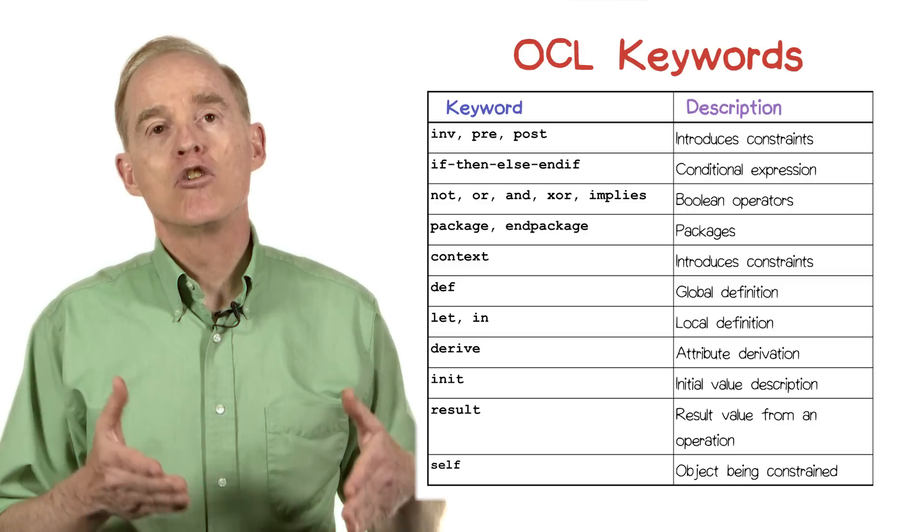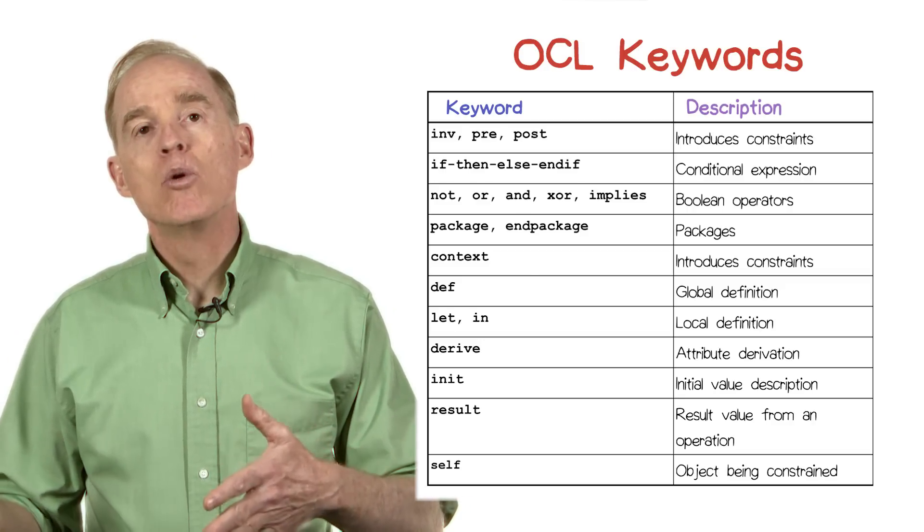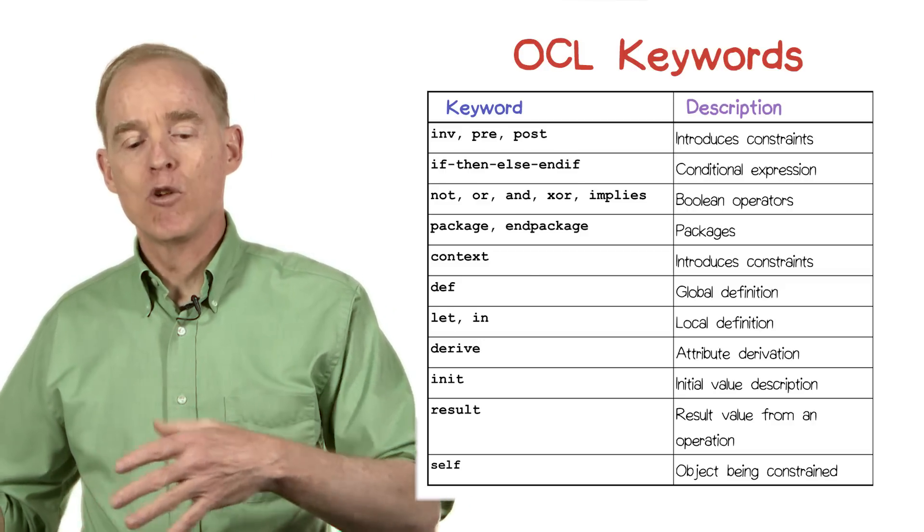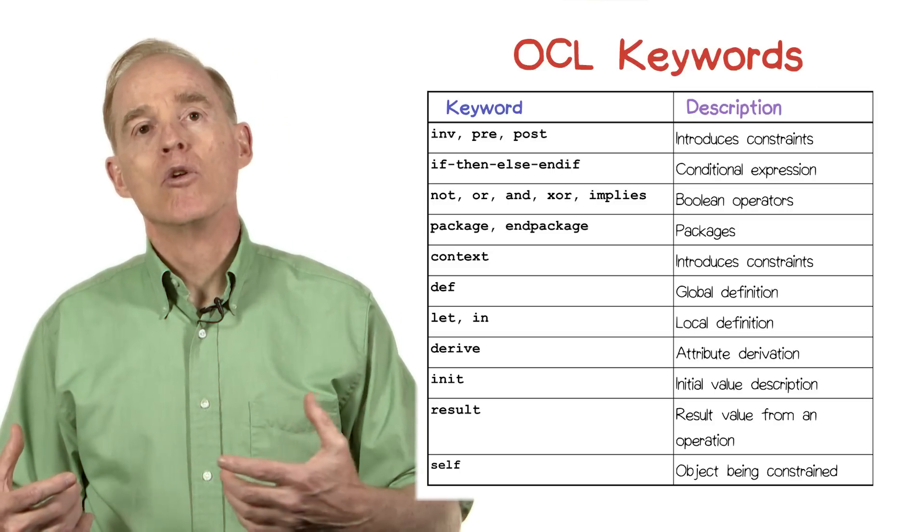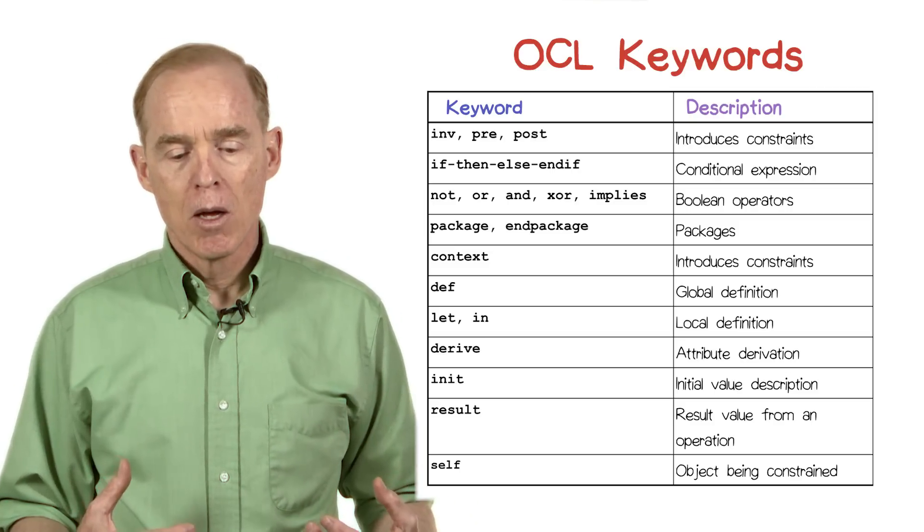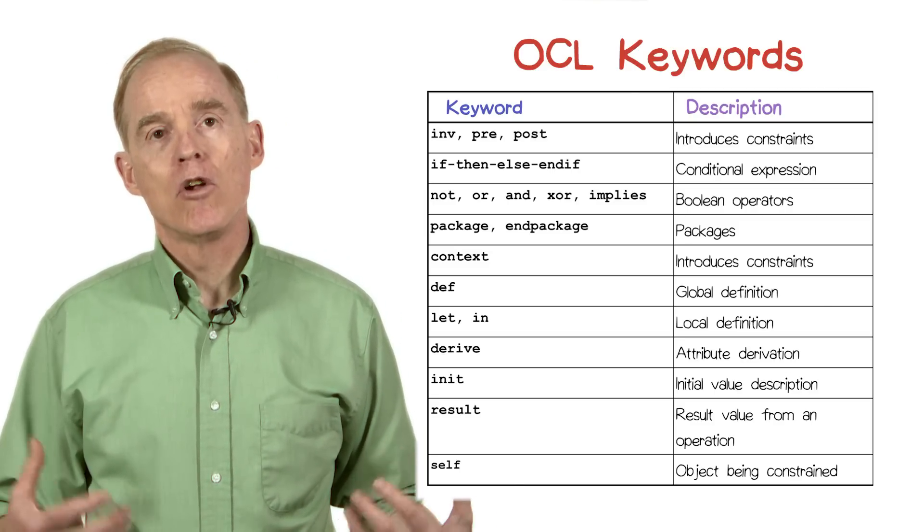There's the ability to indicate that you're computing the value of a derived attribute, the derived keyword. There's the ability to indicate that you're specifying an initial value. And we've already seen result and self.